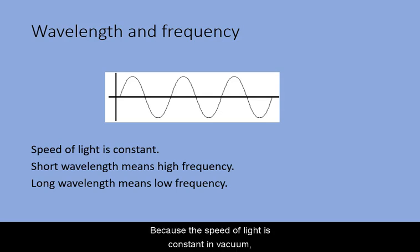Because the speed of light is constant in vacuum, wavelength and frequency are inversely related. A short wavelength means high frequency and a long wavelength means a low frequency.